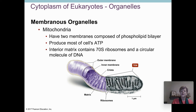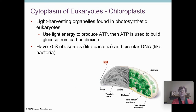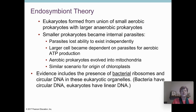The cytoplasm of eukaryotes contains mitochondria — you've probably learned enough about mitochondria in previous coursework — and chloroplasts in the photosynthetic organisms.